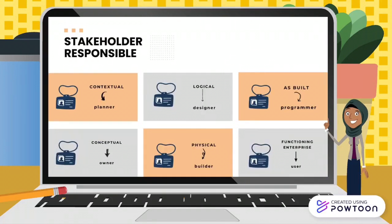There are six stakeholders that will be responsible in the Zachman Framework. For contextual, the one that will be responsible is the planner, while for logical it is the designer. As built is responsible for the programmer, and conceptual for the owner. Builder is responsible for physical aspects, and as a user, we are responsible for the functioning enterprise.